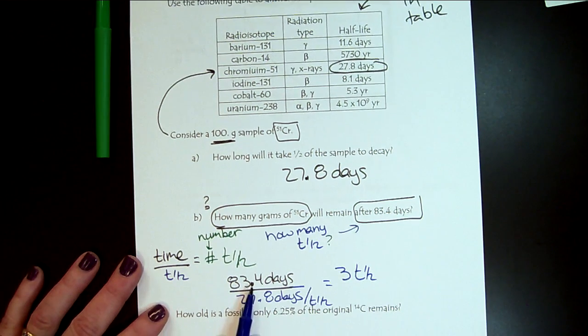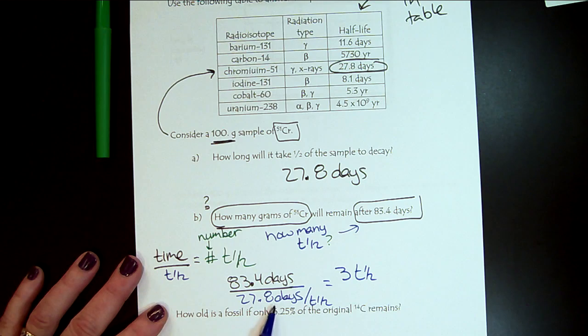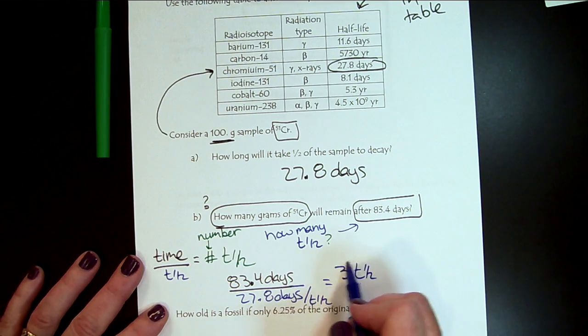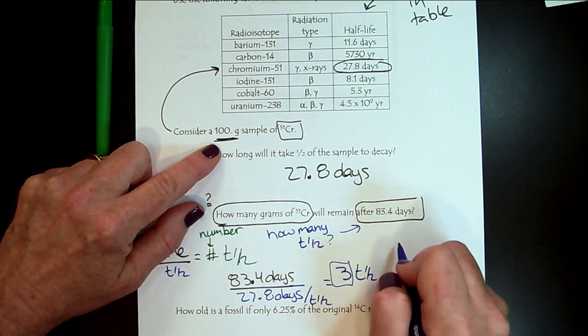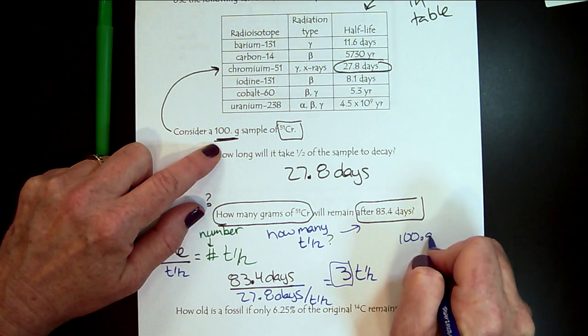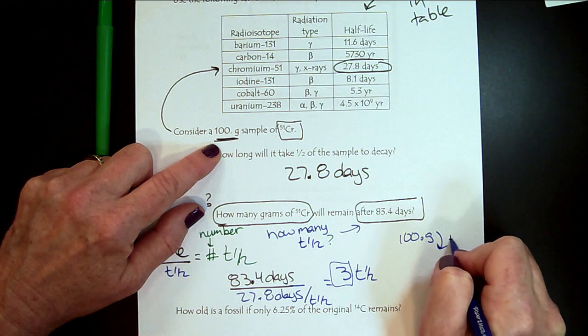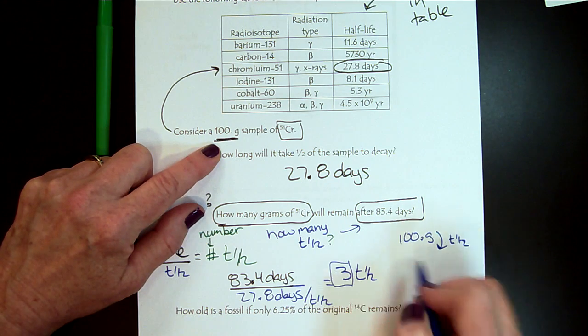So if we look here, there's our 83.4 days, and then there are 27.8 days in a half-life. So we can put that per half-life, and that would tell us we have three half-lives. So we take the time we're going to observe the sample, how many half-lives can fit into it. This will always be a whole number. So we started with 100 grams.